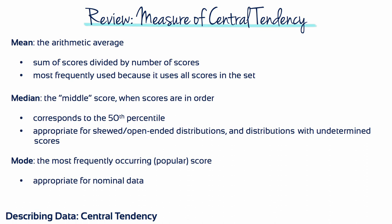To review, the mean is the arithmetic average. It's the sum of scores divided by the number of scores. It's most frequently used because it uses all scores in the set. The median is the middle score when scores are in order from lowest to highest. It corresponds to the 50th percentile and is appropriate for skewed or open-ended distributions and distributions with undetermined scores. And the mode is the most frequently occurring score and is appropriate for nominal data.